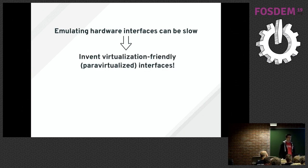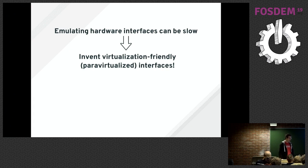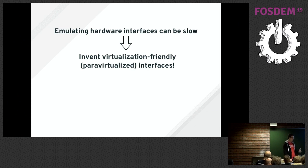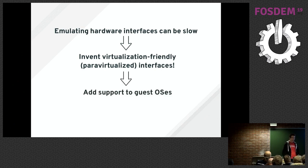How do we solve these problems? Well, if the hardware interface we need to emulate is slow and we cannot make it fast, we come up with our own solution and invent a so-called paravirtualized interface which is fast and software-friendly. But then when we have our own interface, we have to put support for this interface in the guest operating system, because it doesn't know anything about it.